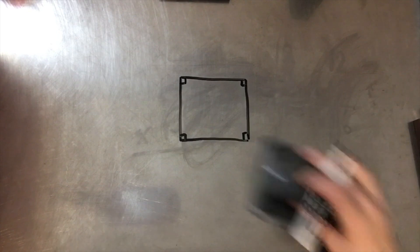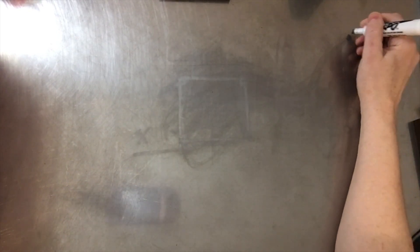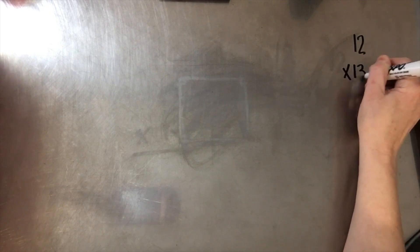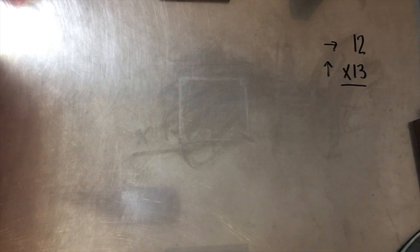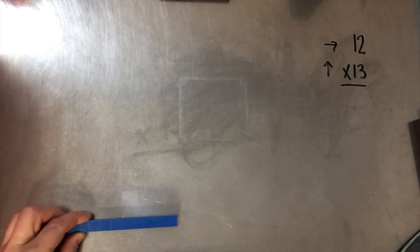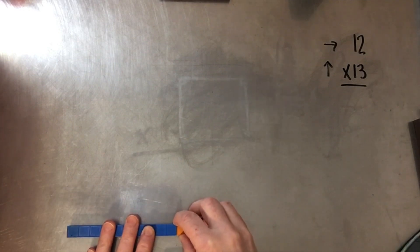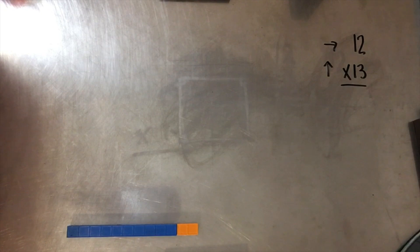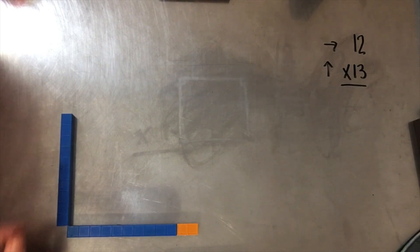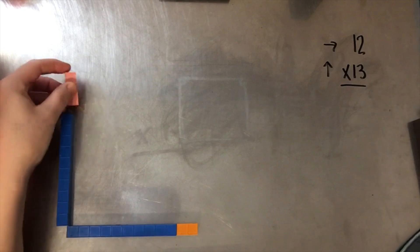For 12 times 13, we are going to have 12 across and 13 up. We're going to use measuring sticks, because this is the beginning for a lot of people. We want it to be 12 across, so there's 10 plus 2 — that's 12. And then our up distance is going to be 10 plus 3, which is 13.